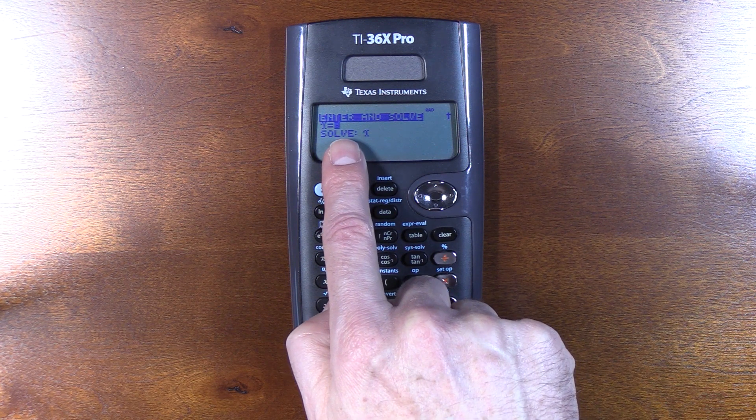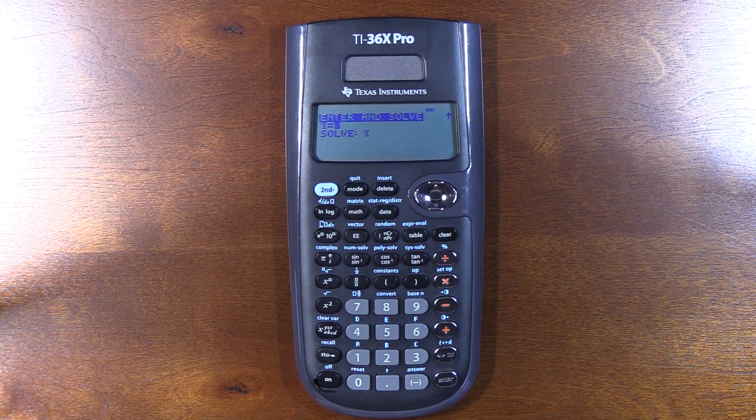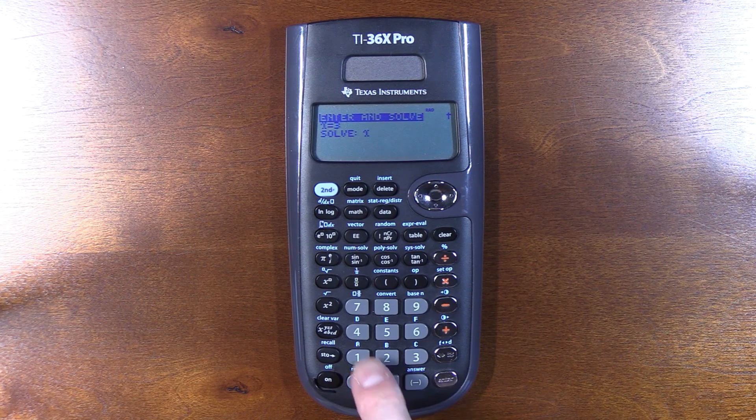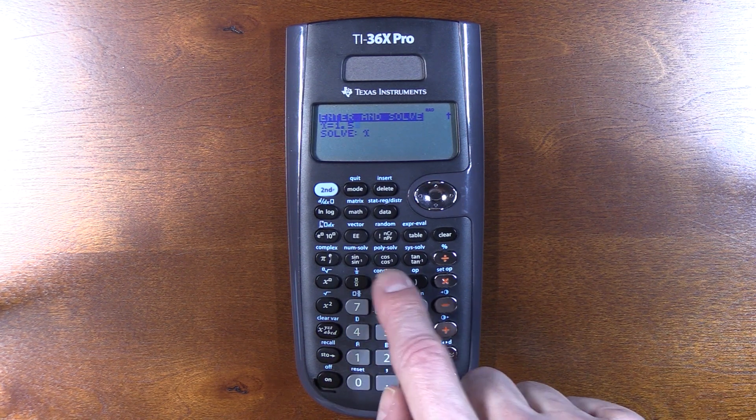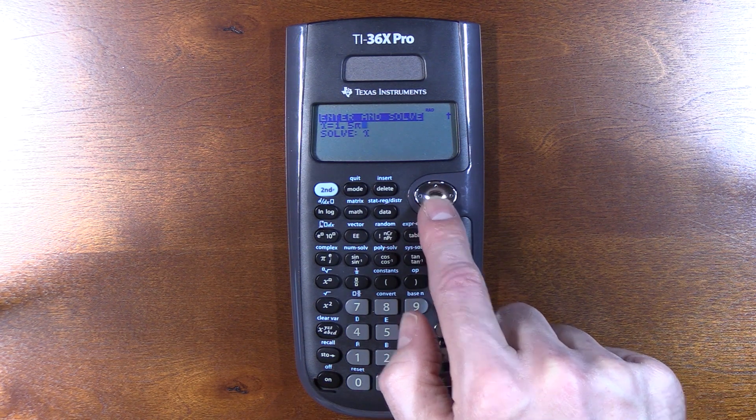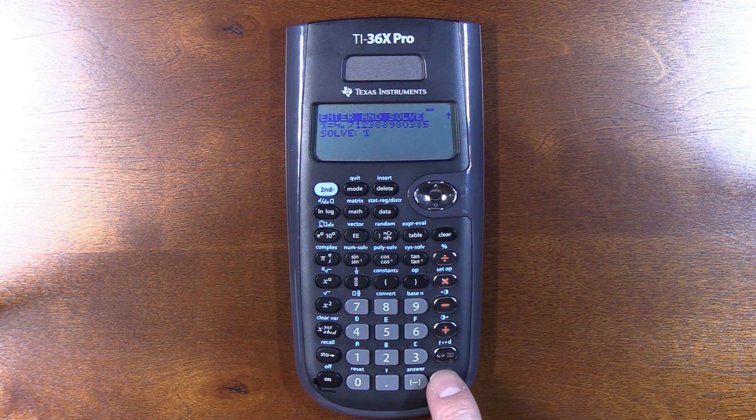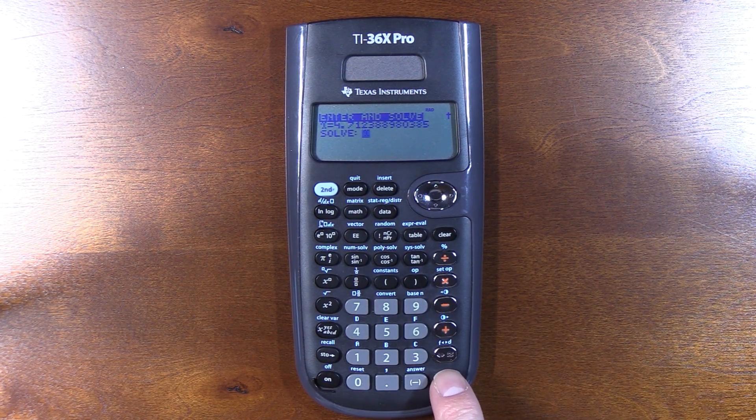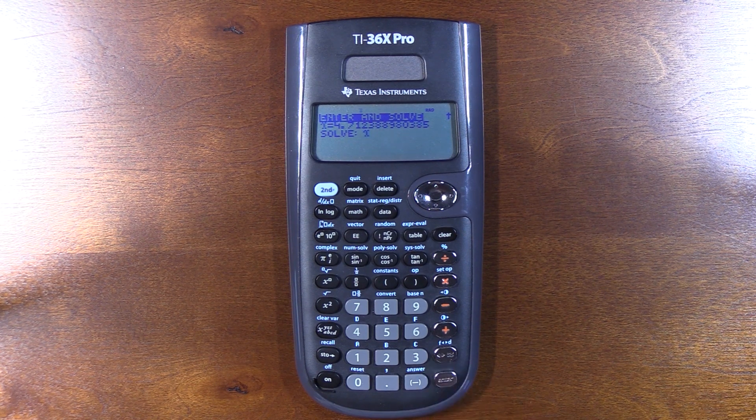I'm going to give it a guess. I know it's less than 2π, so let's go with, how about 1½π? That seems reasonable. All right, so we're saying X is somewhere around 4.7. Solve it.